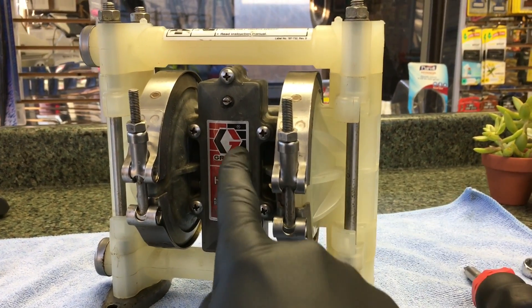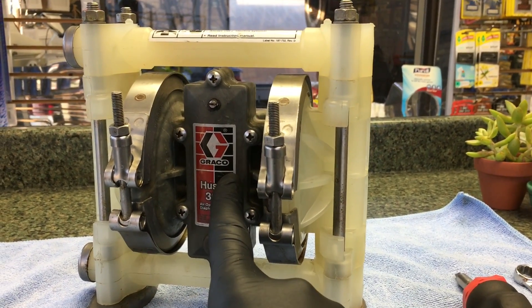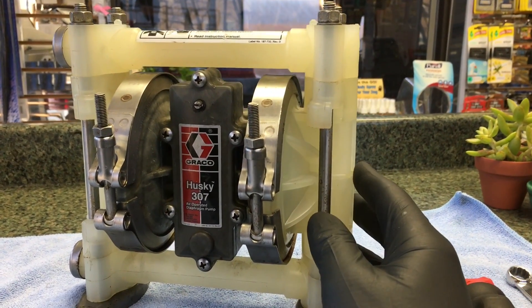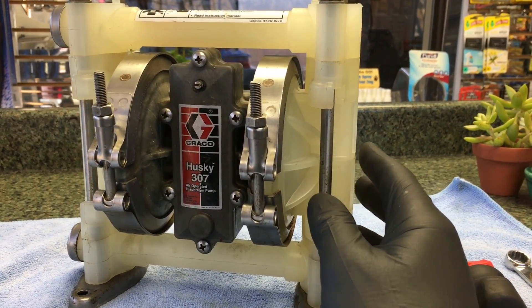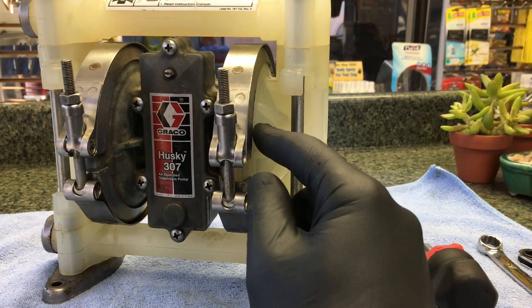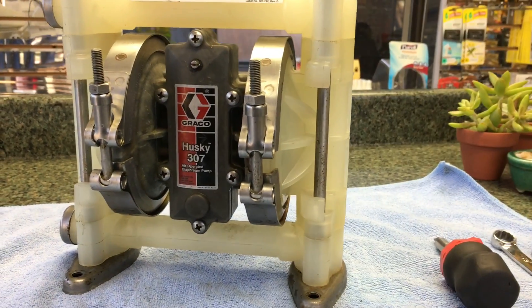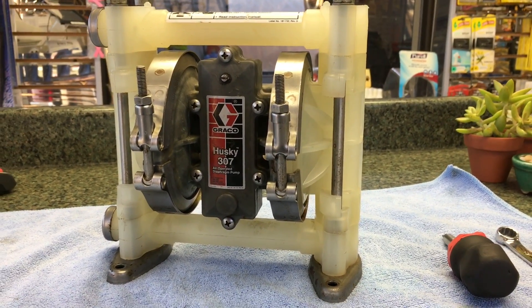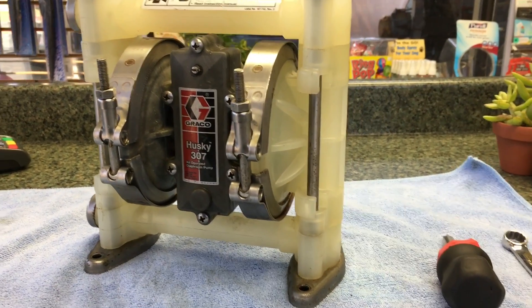But many other times - this is a car wash, I have had these used in the past - most of the time it's the diaphragms inside. Either they get a tear or, depending on what kind of chemical you're using, they just wear out over time.